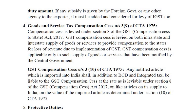Goods and Services Tax Compensation Cess under Section 3(9) of CTA 1975. When GST was introduced, finance ministers of many state governments resisted it fearing loss of revenue. In order to help state governments from incurring losses due to GST, compensation cess was levied by the central government on certain goods, and that will be used to give compensation to state governments for loss of revenue. GST Compensation Cess is levied on both intra-state and inter-state supply of goods and services to provide compensation to states for loss of revenue due to implementation of GST.